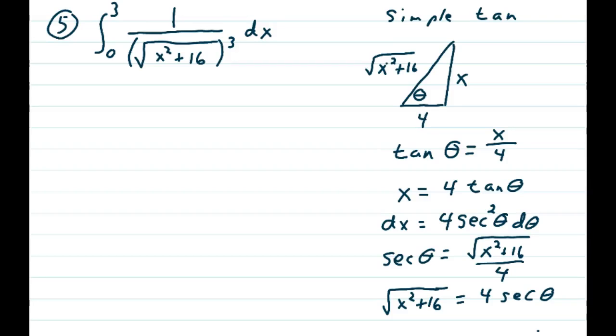Problem 5: Integral from 0 to 3 of 1 over (√(x²+16))³ dx. This could be a u-substitution if I had an x on top, but unfortunately I don't.